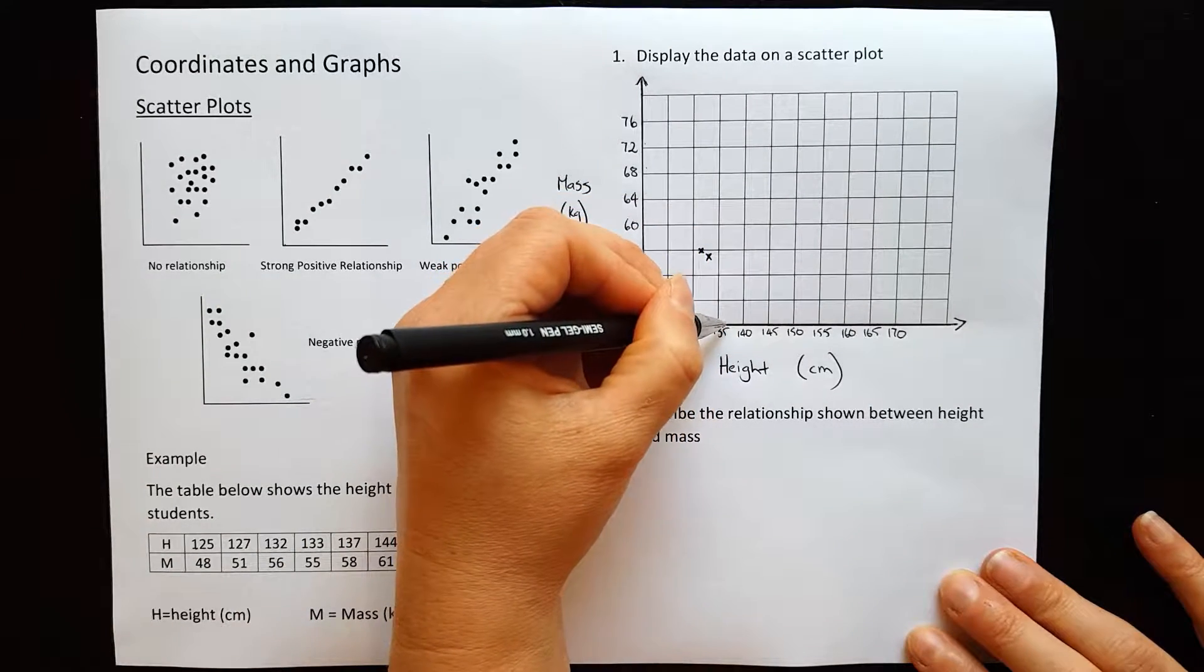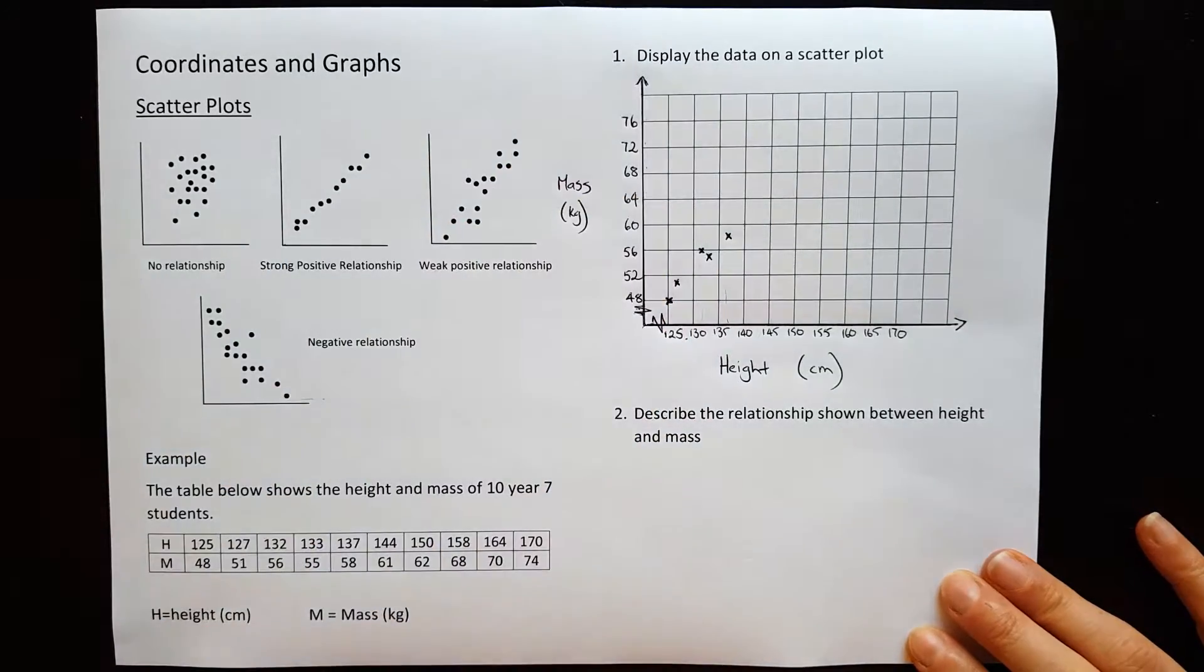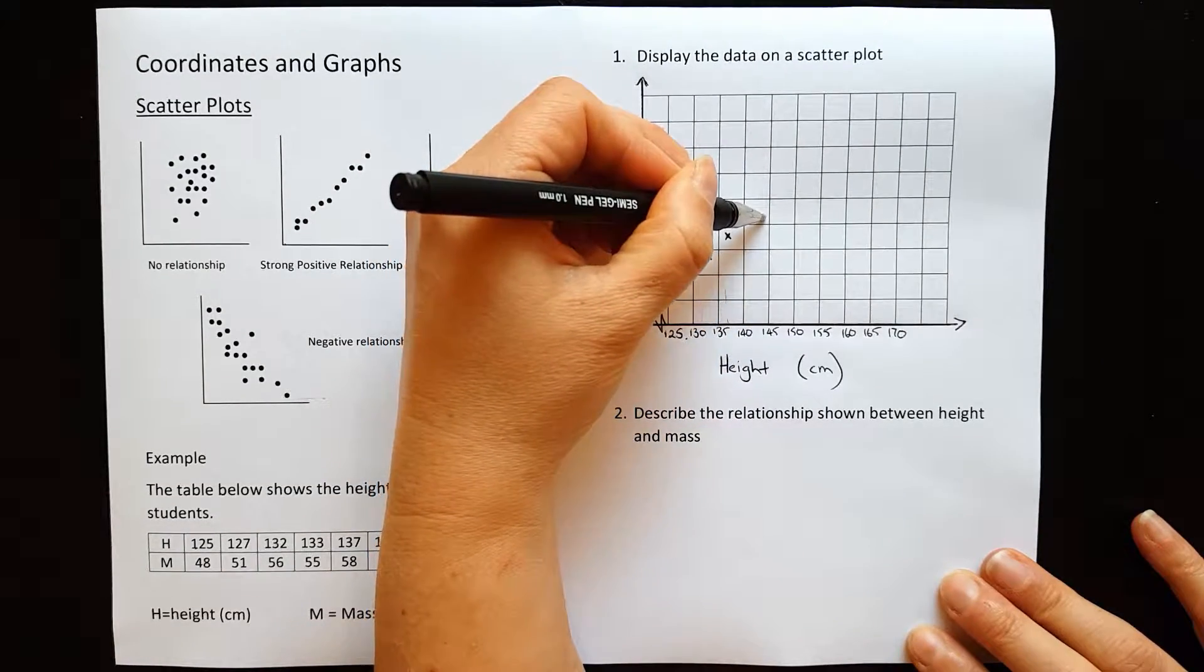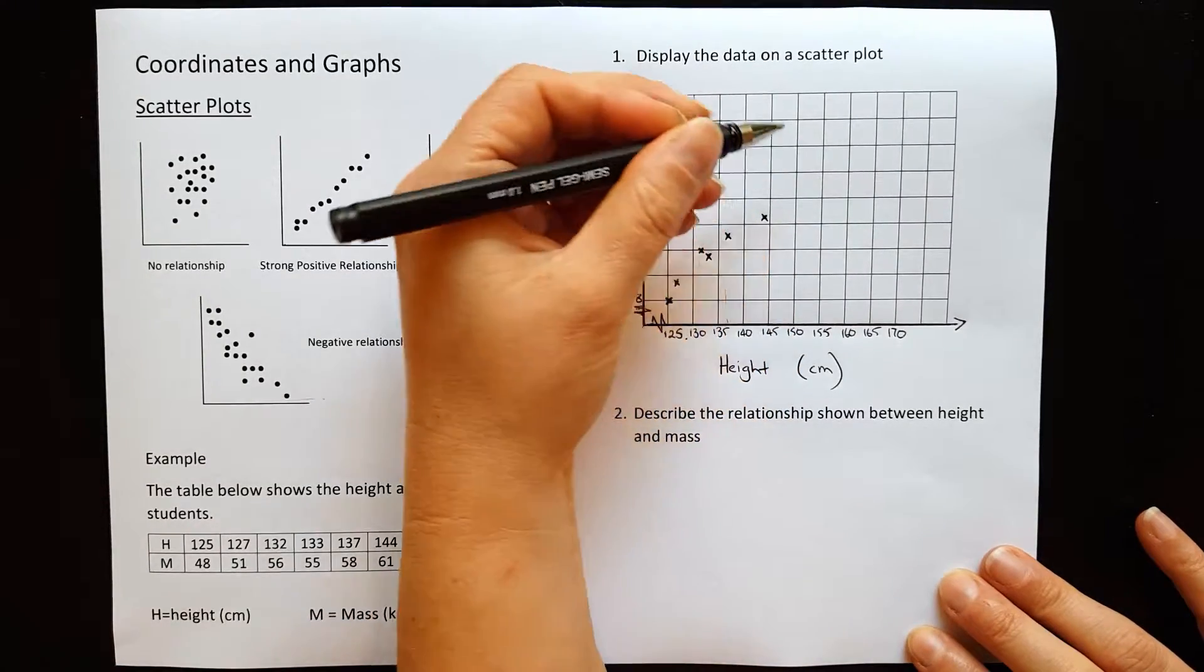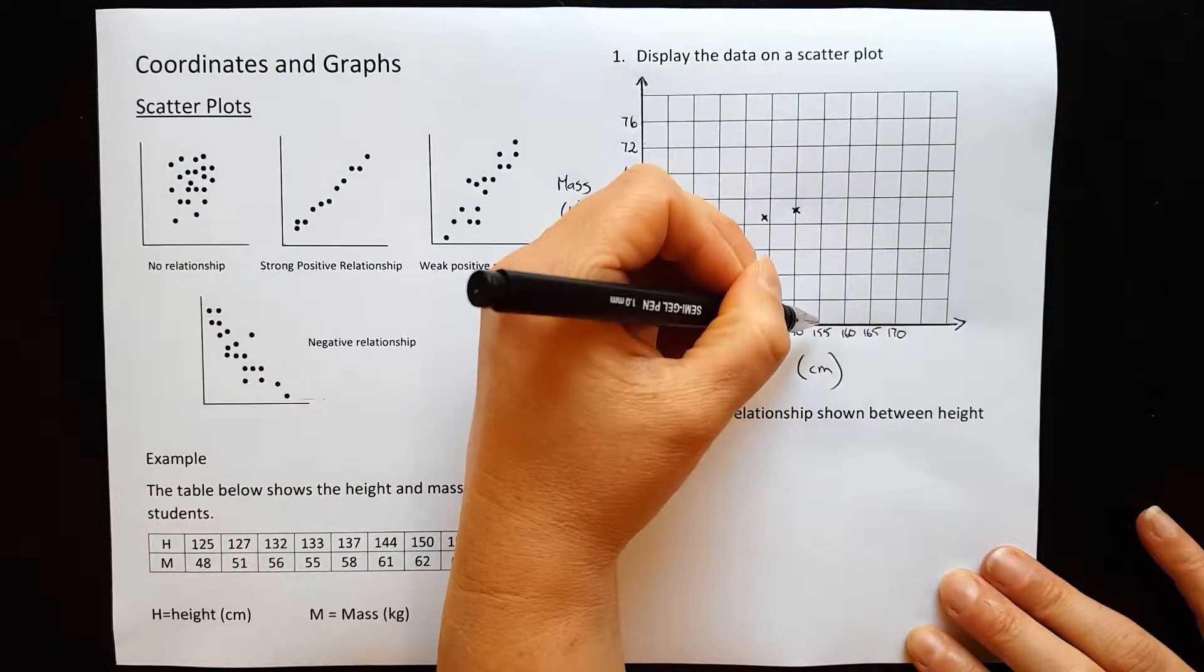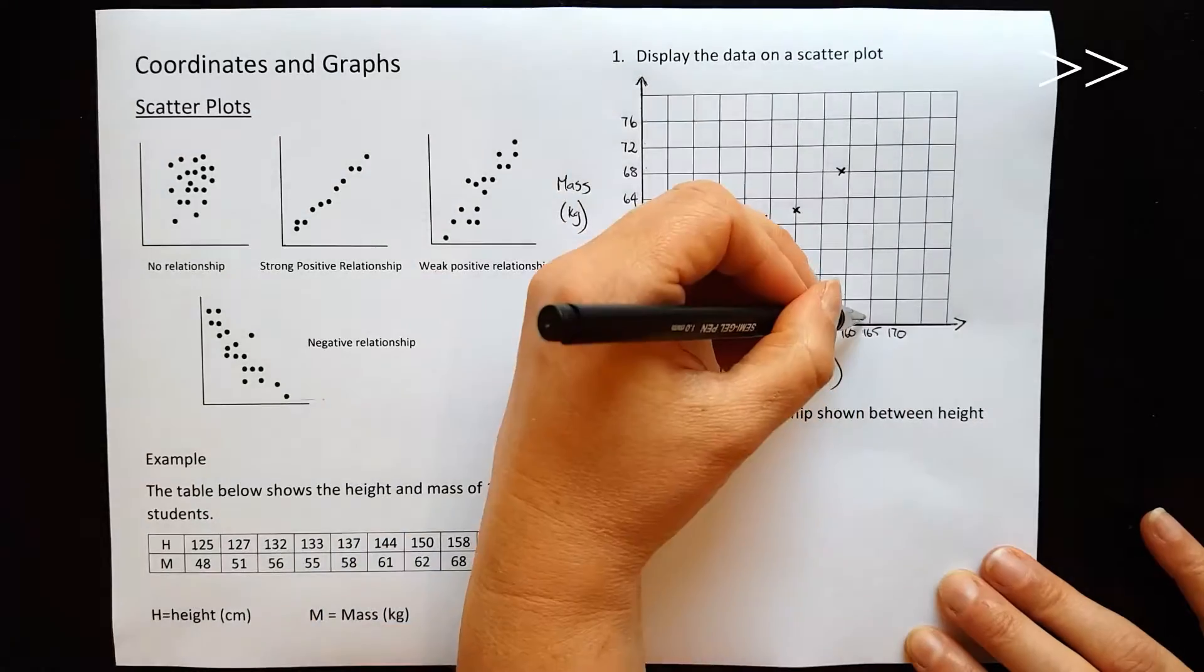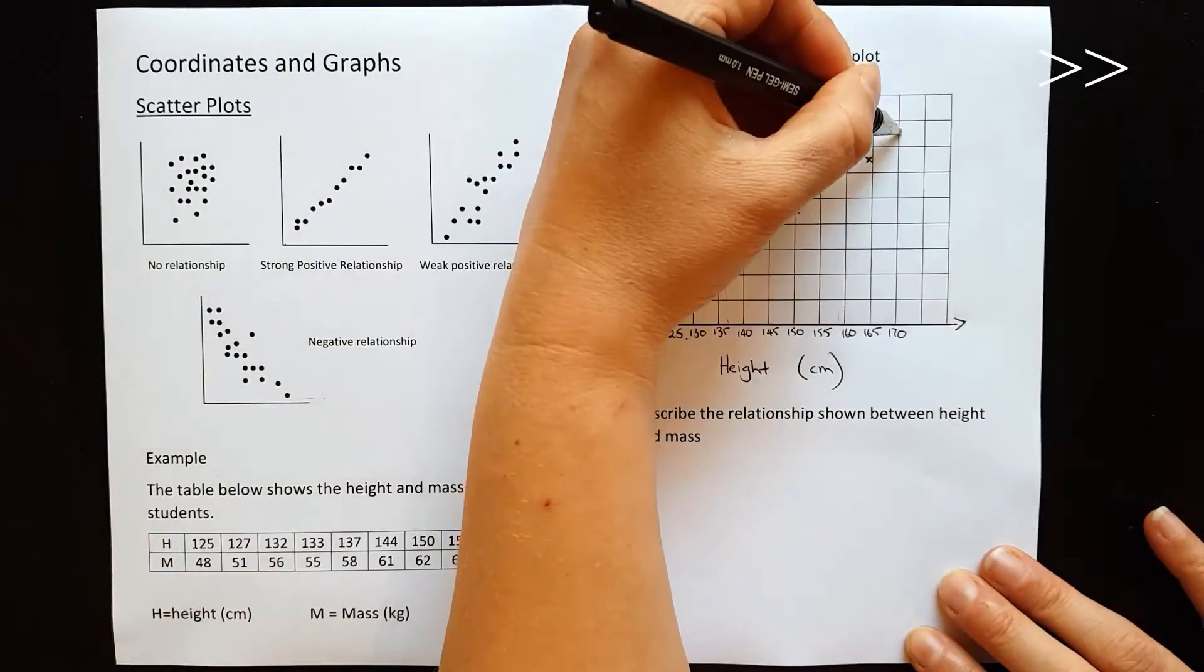137, 58. 137 would be here, 58 would be right in the middle of 56 and 60. 144, 61. 144 is here, 61. And 150, 62. 150, 62. 158, 68. 158 would be about there. And what was the other one? 68. 164, 70. About here. And 170, 74. There you go.